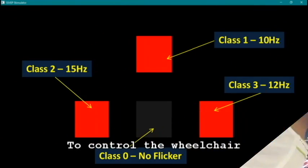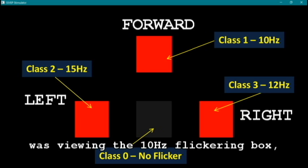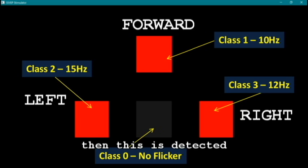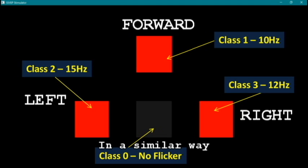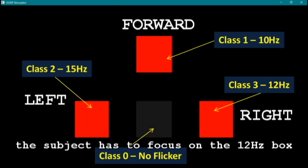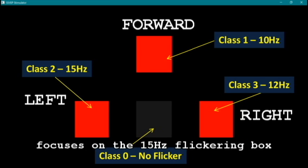To control the wheelchair, the subject has to view any one of these boxes. If the subject was viewing the 10 Hz flickering box, then this is detected from the EEG signal and it is mapped to a forward command to move the wheelchair. In a similar way, to move the wheelchair right, the subject has to focus on the 12 Hz and to move it left, the subject focuses on the 15 Hz flickering box.